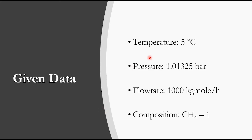We have been given that the feed temperature is 5 degrees centigrade, the pressure is 1.01325 bar, the flow rate is 1000 kg-mole per hour, and the composition is pure methane with a mole fraction of 1. So this is 1000 kg-mole per hour of pure methane at 5 degrees centigrade and 1.01325 bar, which needs to be compressed to 30 bar. We will use the multi-stage compression module in Aspen+ to simulate this process.